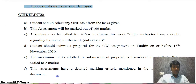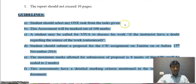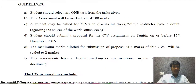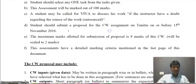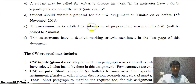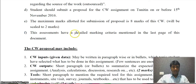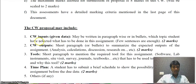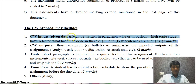This is very important: students must submit a proposal before starting the experiment. You must first select one task. The assignment is for 100 marks, later converted to 25 marks. If the instructor has a doubt regarding the source of work, you may be called for a viva. Students should submit the proposal by 15 November. The maximum marks allotted for the proposal submission is 8 marks.